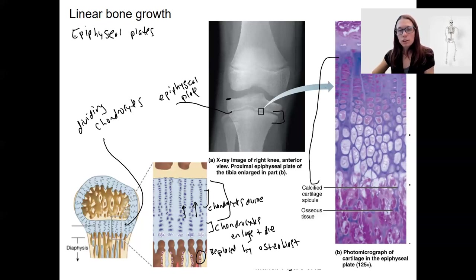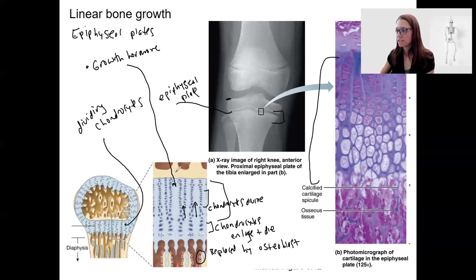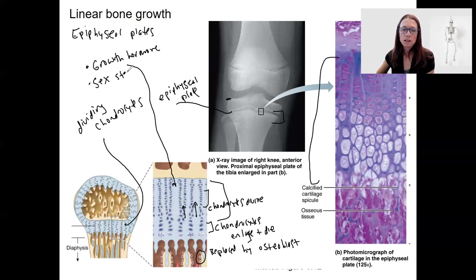This process is triggered by a couple of hormones. Growth hormone, which is high during periods of adolescence and young kids, actually triggers proliferation — the dividing of these chondrocytes — to increase this length, and also increases calcium retention in the bone. Sex steroids also stimulate bone growth, so testosterone and estrogens that are increased in levels at puberty.